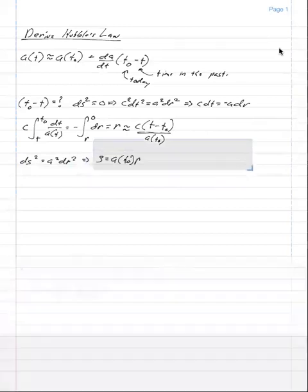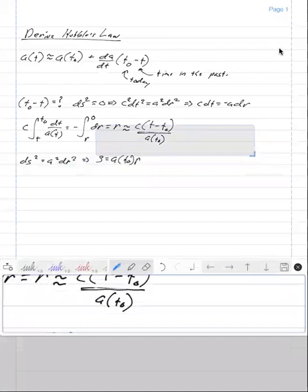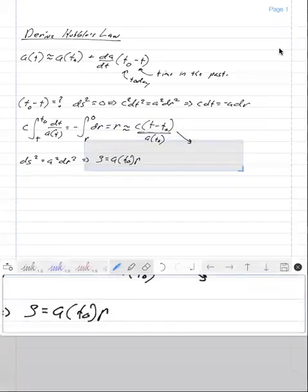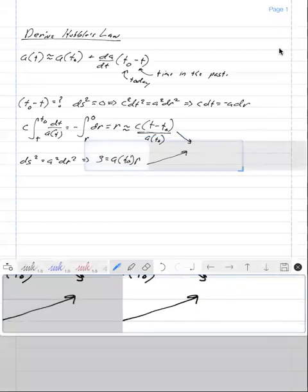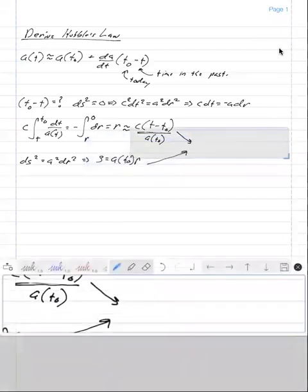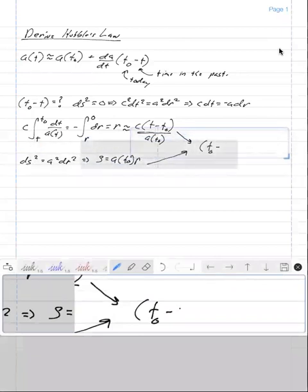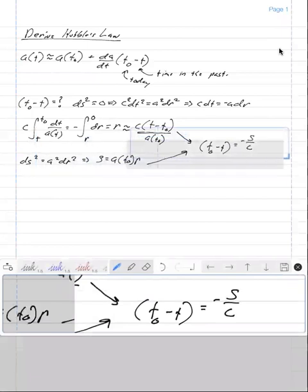When we combine these two expressions, we get that t naught minus t is equal to minus s over c.